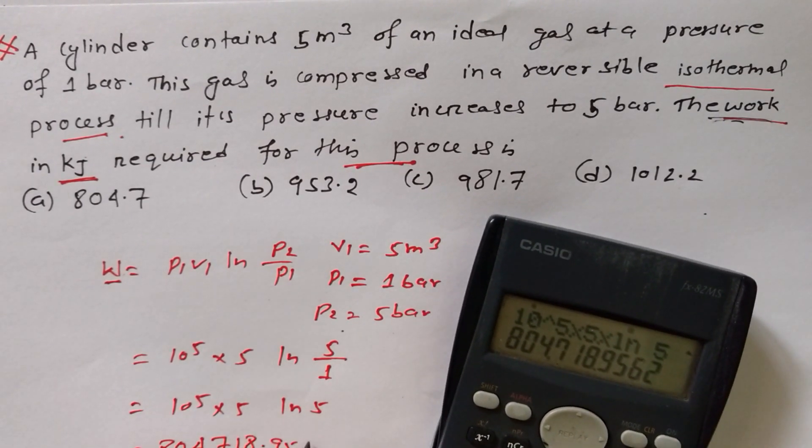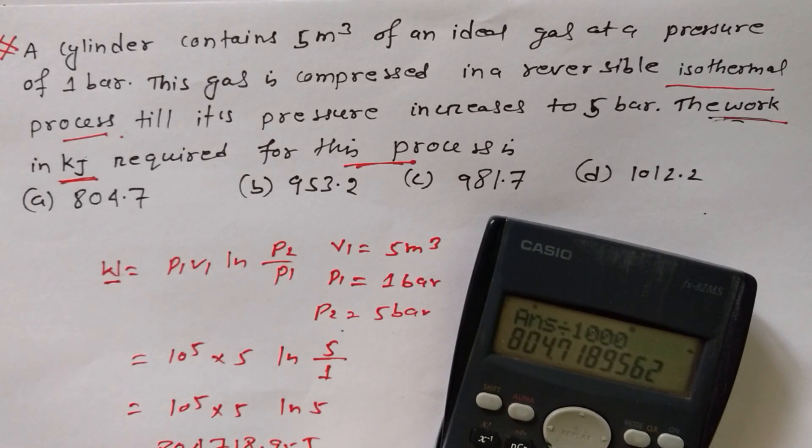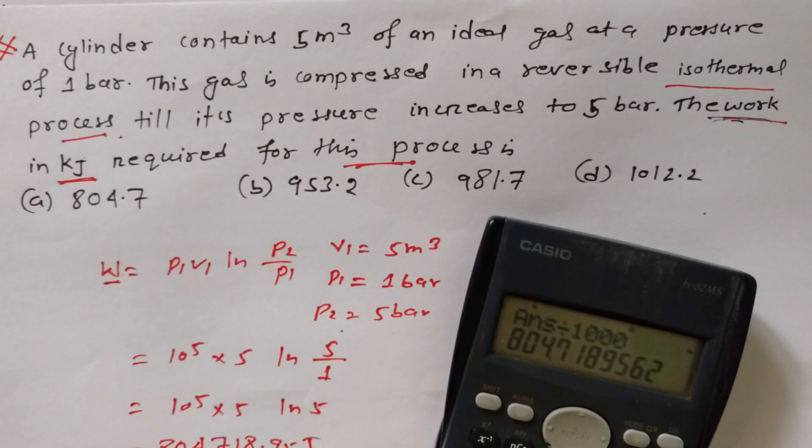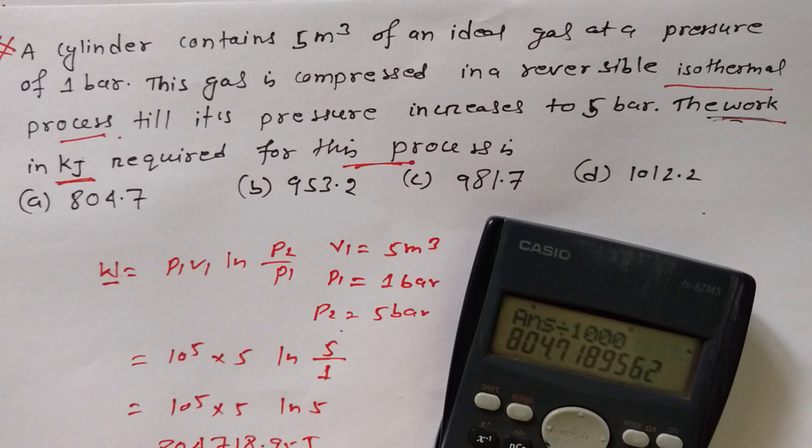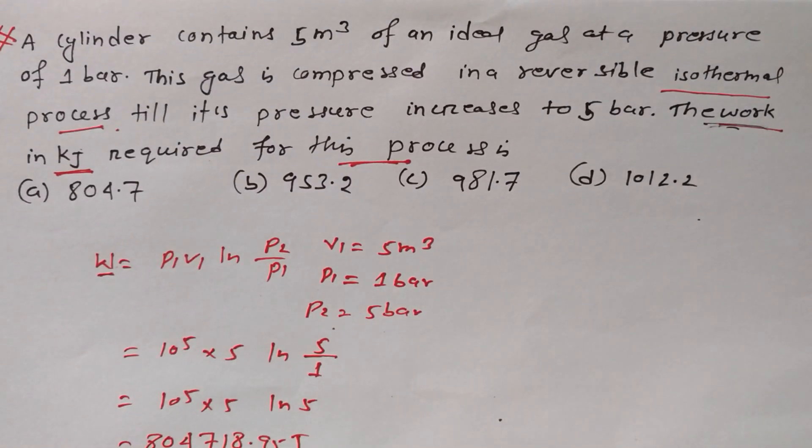804,718.95 joule. So in kilojoule, divide by thousand, so 804.718 kilojoule is the answer. Now check it out which one is our answer.